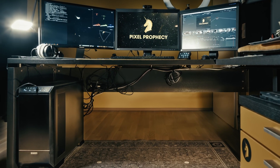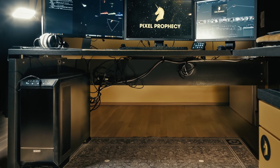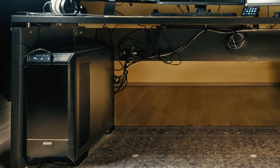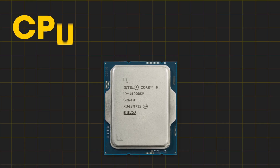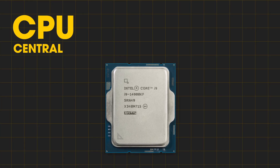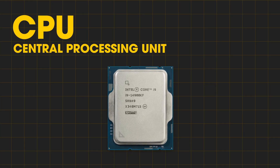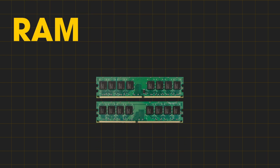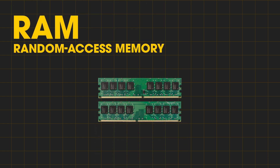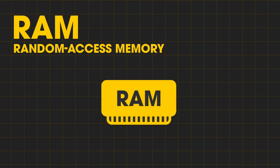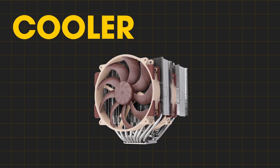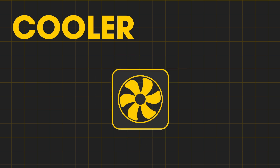An average gaming desktop computer system usually is made up of these components: a CPU — the central processing unit, the brains of a computer — random access memory for the CPU to quickly store and access data, and a cooler to cool the CPU.